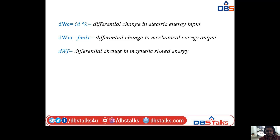In differential form: dWe = I · dλ, which is the differential change in electric energy input. dWm = Fm · dx, which is the differential change in mechanical energy output. dWf is the differential change in magnetic stored energy.